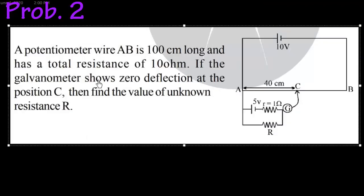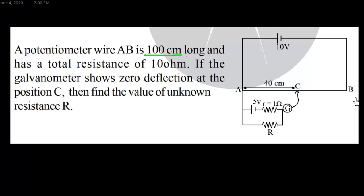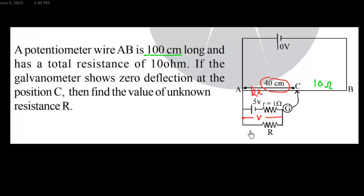In this question, a potentiometer wire AB is 100 centimeters long and has a total resistance of 10 ohm. It shows null deflection at 40 centimeters. The voltage across AC, that is KX, will be equal to V here. We have to find the unknown resistance.